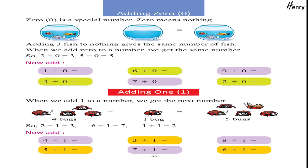Adding zero. Zero is a special number; zero means nothing. Adding three fish to nothing gives the same number of fish. When we add zero to a number, we get the same number. So, three plus zero equals three; five plus zero equals five. Now add.